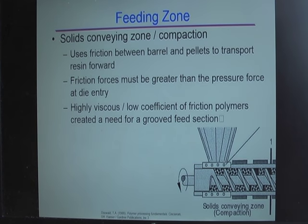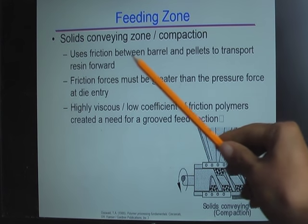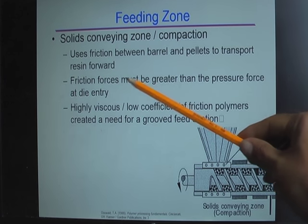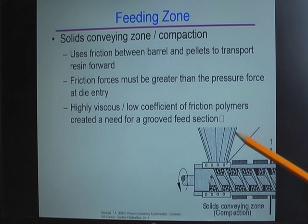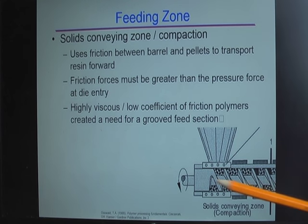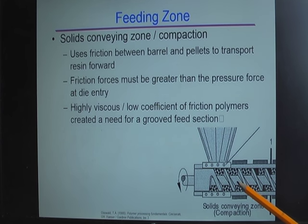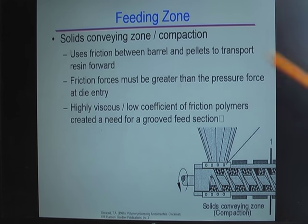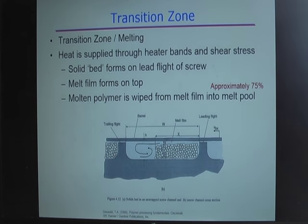Now let's look at the feeding zone, also called the solid conveying zone. This zone uses friction between the barrel and the pellet to transport the resin forward. You need to make sure the friction force is higher than the pressure force generated at the die entry, otherwise the material will go backward. For some polymers with a low coefficient of friction, a grooved barrel is used to increase friction and transport the pellets.